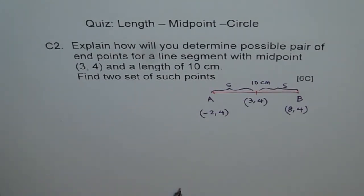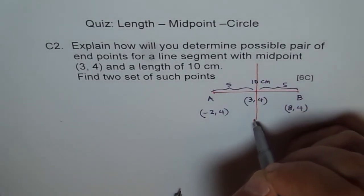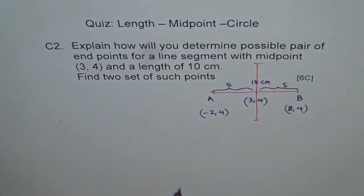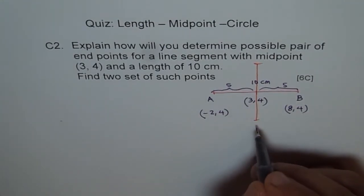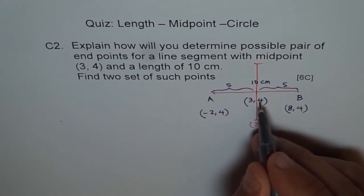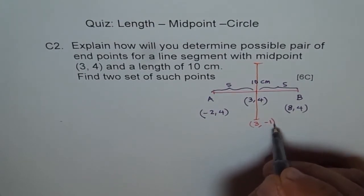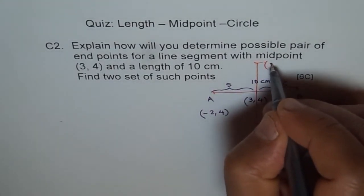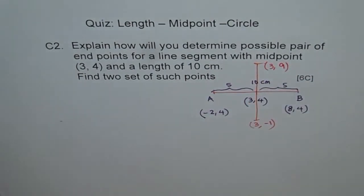How will I get the other set? For getting the other set, we can go vertical. So this time what we do? You will add and subtract 5 to the y value. If you do that, x remains same. So we get 3, and y will be minus 5. So it is minus 1. And this will be 3 and 9. So vertical 9 minus minus 1 gives you 10.